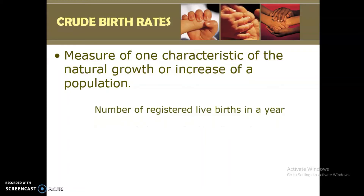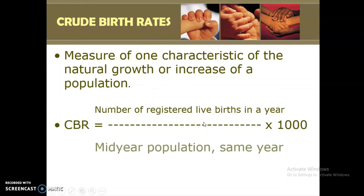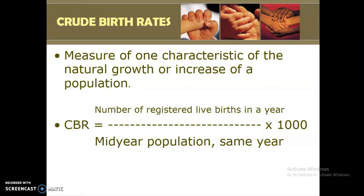For us to better understand this, here is the formula. Your crude birth rate (CBR) equals the number of live births in a year over the mid-year population of the same year, multiplied by 1,000. In some books, instead of mid-year population, you may see 'estimated population as of July 1' — they are the same. The 1,000 here is a constant number. Since this is a rate, we have to consider time and place.